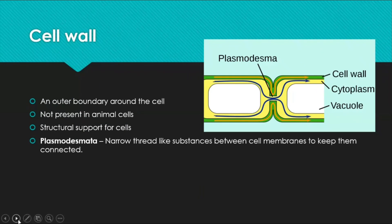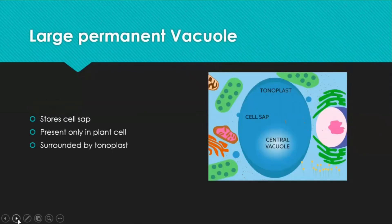The cell wall is the outer boundary found only in plant cells. It provides structure and shape to the cell and helps withstand turgor pressure when the cell is filled with water during osmosis. Small fiber-like structures called plasmodesmata connect cell membranes between adjacent cells. The large permanent vacuole, present only in plant cells, is surrounded by a layer called the tonoplast and contains cell sap, storing nutrients for the plant.